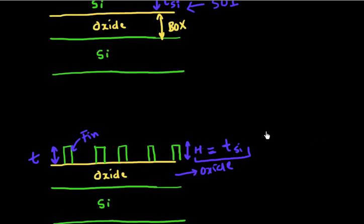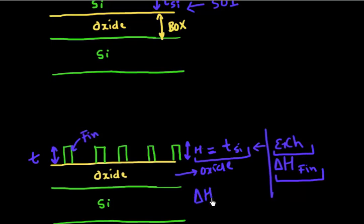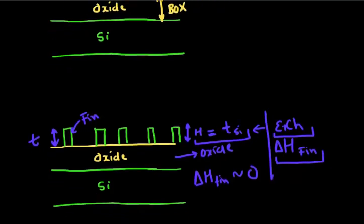Which is in a way good because whenever we do etch steps to determine the height of my fin, I'll be having additional variability coming into the picture due to the uniformity of this etch process. But in this case of an SOI FinFET, my variation in height would be negligible, assuming that I had a good uniform SOI substrate to start with.